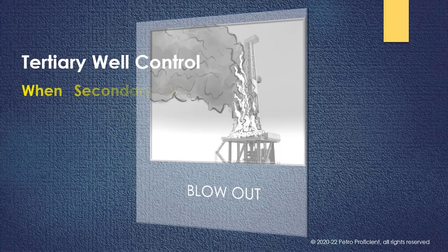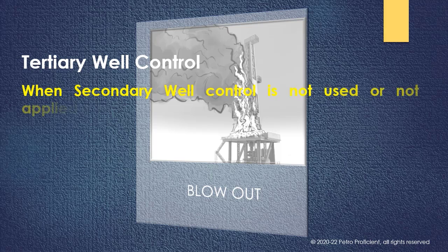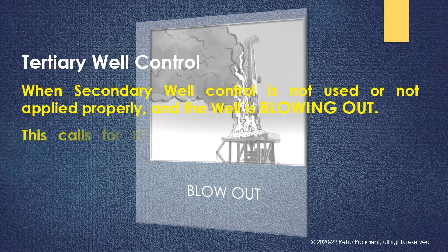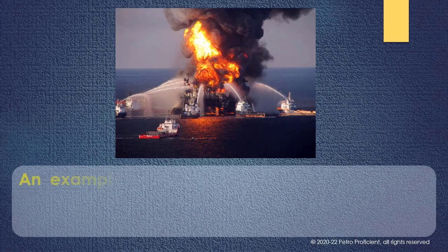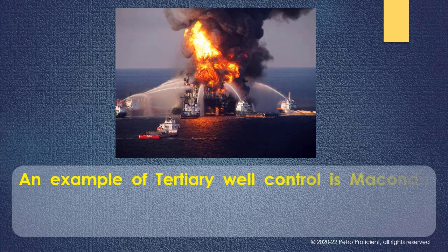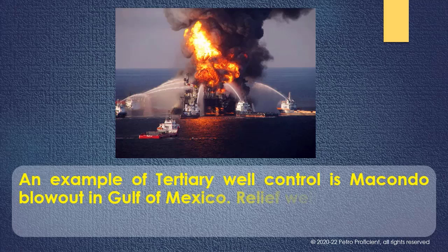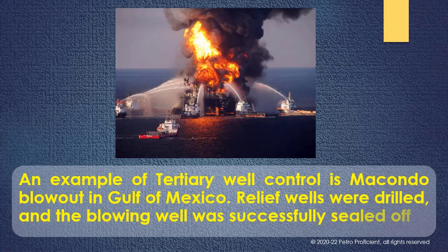When secondary well control is not used or not applied properly and the well is blowing out, this calls for capping of well and or relief wells. This is tertiary well control. An example of tertiary well control is Macondo blowout in Gulf of Mexico. Relief wells were drilled, and the blowing well was successfully sealed off.